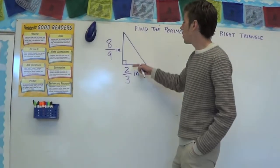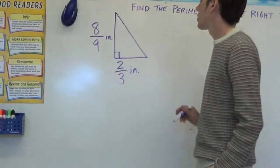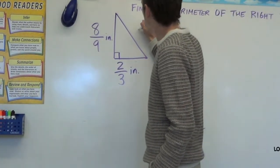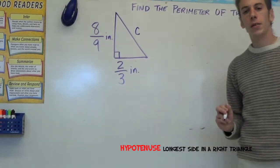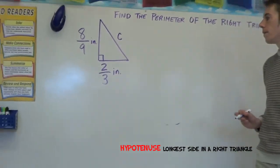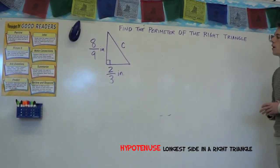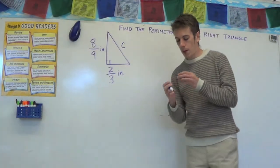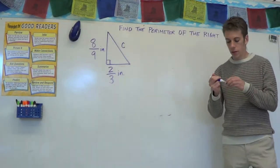So to find the perimeter, we know we got to find all three sides. We have two of the sides, what we don't have is the longest side or the hypotenuse, that's C right here. So, if we have a right triangle and we know the two legs, we can find the hypotenuse by using what theorem? What's the theorem?